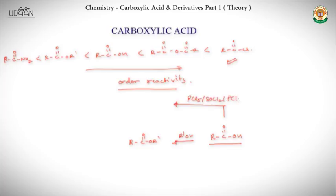We also know that if we add PCl5 or SOCl2 or PCl3 to a carboxylic acid, we will get acid halide. And if we add to acid halide R-C-O plus, we get an anhydride.